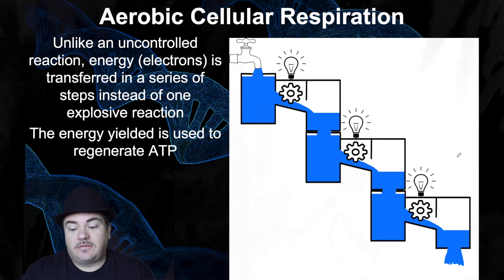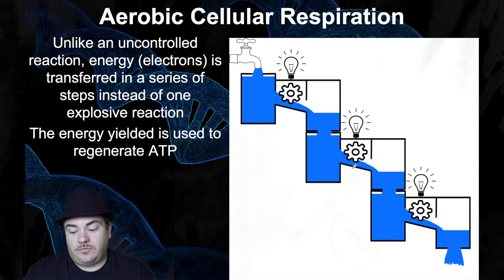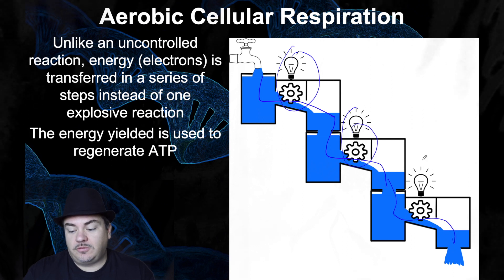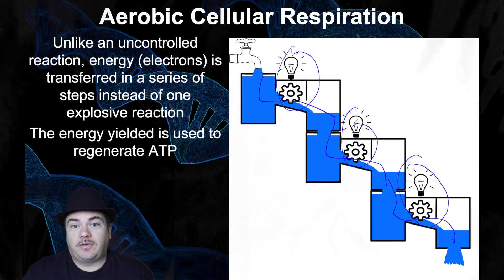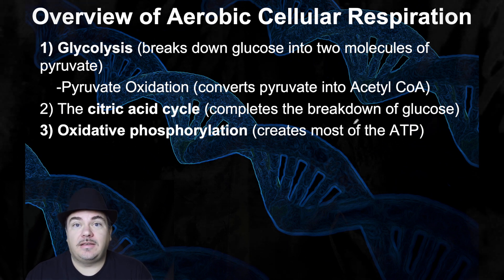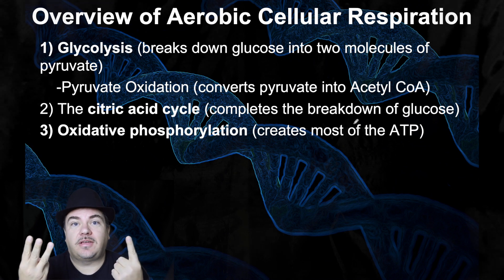This is analogous to a model from a prior lecture about water passing through a system. As water passes through, it can be used to do a little work, then a little more work, then a little more work. That's analogous to what's happening during aerobic cellular respiration — the energy from glucose is going to be released in a series of small steps. Aerobic cellular respiration is literally dozens of chemical reactions, and they're divided into three main stages plus a minor stage.